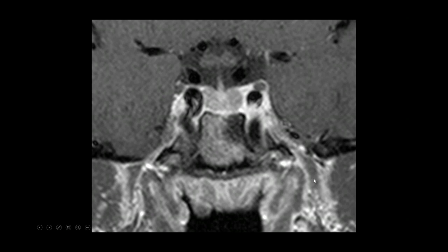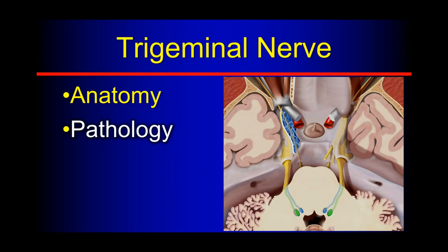That's the anatomy of the trigeminal nerve — just like all cranial nerves: an intraaxial segment with the central cranial nuclei, a cisternal segment, often a dural segment, and for those exiting the skull base, an extracranial segment. For V1 we think about the superior orbital fissure; for V2, foramen rotundum; for V3, foramen ovale; and more inferiorly the inferior alveolar foramen and mental foramen extending out into the mandible.